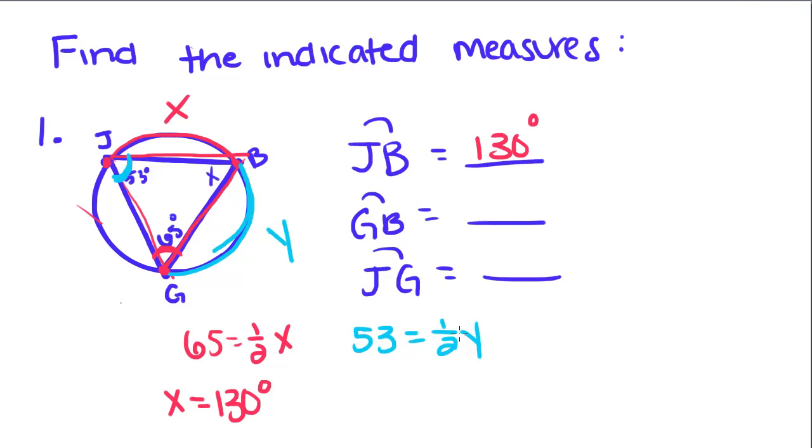You could set it up that way, or you could say that Y equals 2 times the measure of this angle, which is 53. Either way, you have to multiply by 2 and you'll get 106 for the measure of Y.